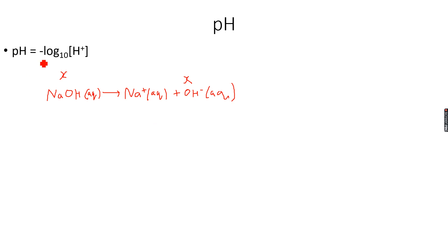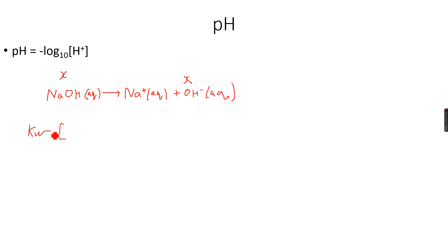If we look at the pH formula, we cannot directly calculate the pH of NaOH because there are no H+ ions — only OH− ions — and we need the concentration of H+. So what we do is use the ionic product of water: Kw equals the concentration of H+ times the concentration of OH−.